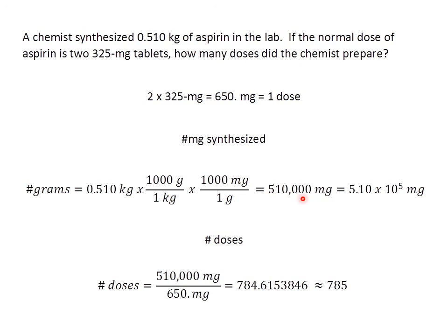Now I need to report this to three sig figs. As written, 510,000 appears to be two sig figs, so I use scientific notation: 5.10 times 10 to the fifth milligrams — moving the decimal point five places to the left. This is three sig figs. Remember, this is a trailing zero coming after the decimal point and preceded by a non-zero number, so it is significant.